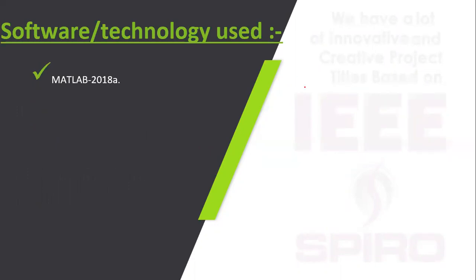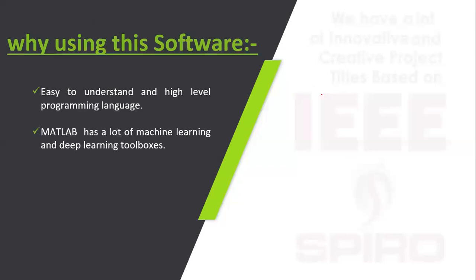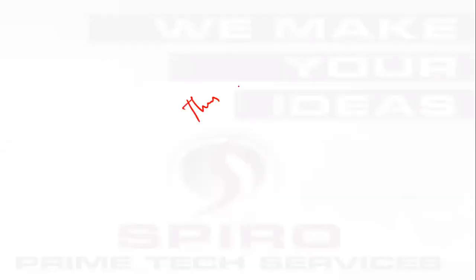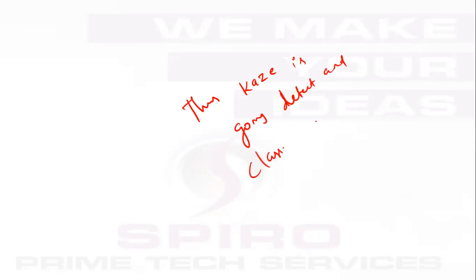In this project we are using MATLAB 2018. We are using this version because it is easy to understand and has a lot of toolboxes, which makes our system easier. It supports a 64-bit operating system. The CASE algorithm is going to detect and classify the traffic density.